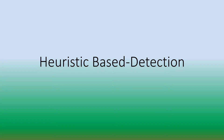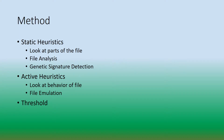Welcome back. Today we are going to talk about heuristic-based detection. In heuristic-based detection, we're looking at the entirety of a file, and there are two types of heuristics.